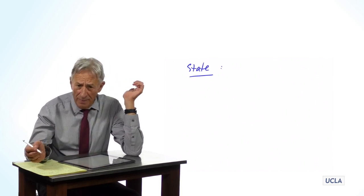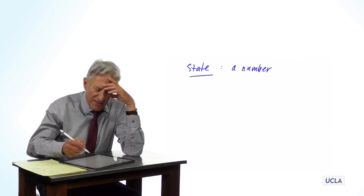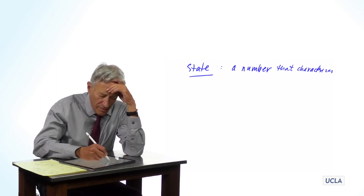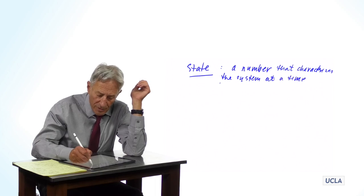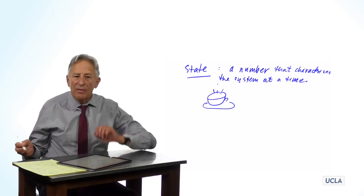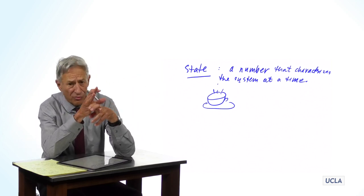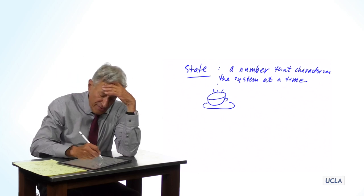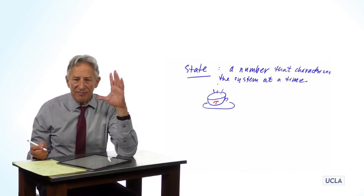Our first example is going to be a single number. We're going to define a state as a number that characterizes the system at a time. For example, suppose we're studying the cup of coffee in the room. The state of the cup of coffee could be where in the room it is, or the amount of coffee in the cup. In this particular example, I'm going to choose the temperature, capital T, as the state of the cup of coffee at a time.